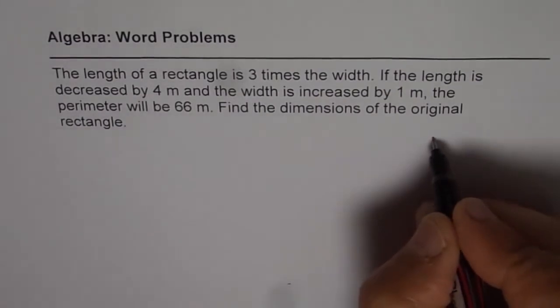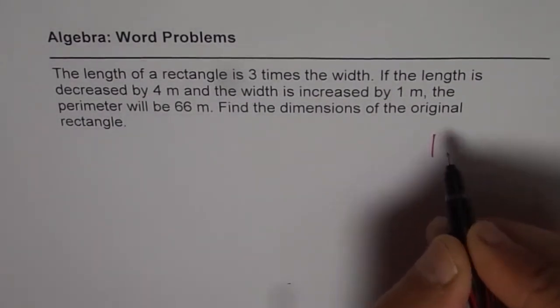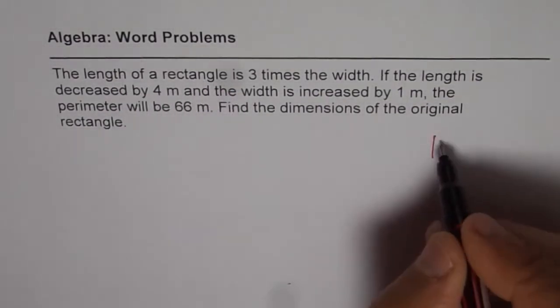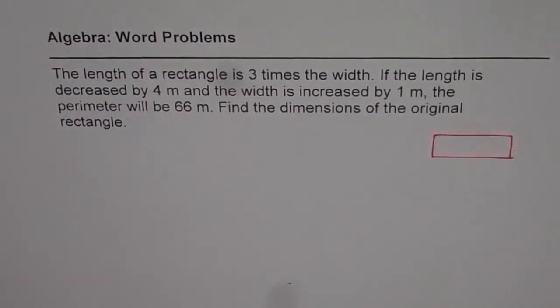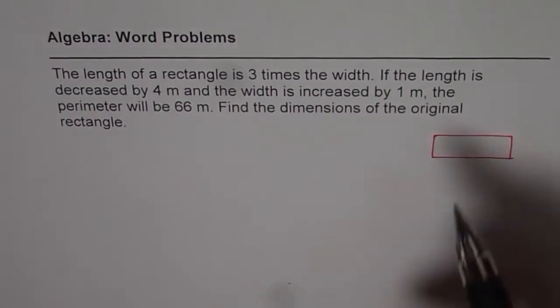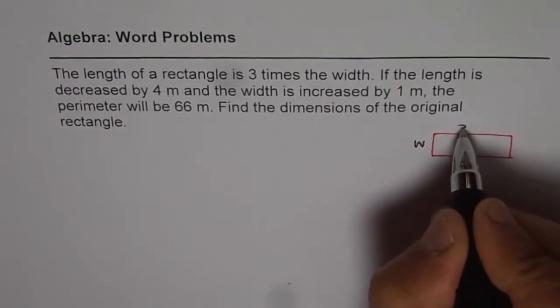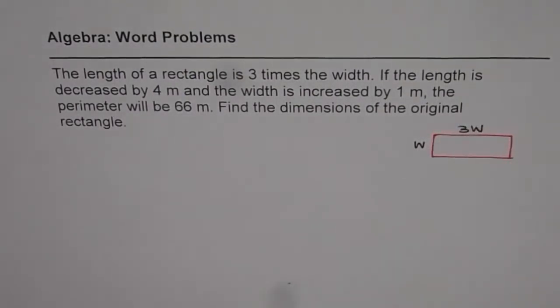So let us draw two rectangles. The original rectangle, we say length is three times width. So let me make it like this. If width is W, length is three times width, 3W. So that is the dimension.